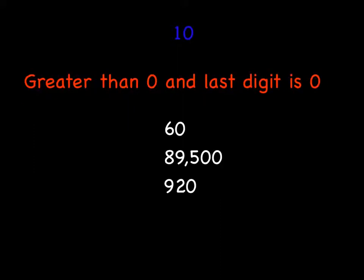And for our last trick, another one of the easy ones, 10. Again, it's got to be greater than zero for the same reason that we gave you for five. Zero is not a factor of 10, can't be multiplied by any number to give you 10. But any other number that ends in zero is a multiple of 10. So that means that 10 is a factor of 60, of 89,500, and of 920.